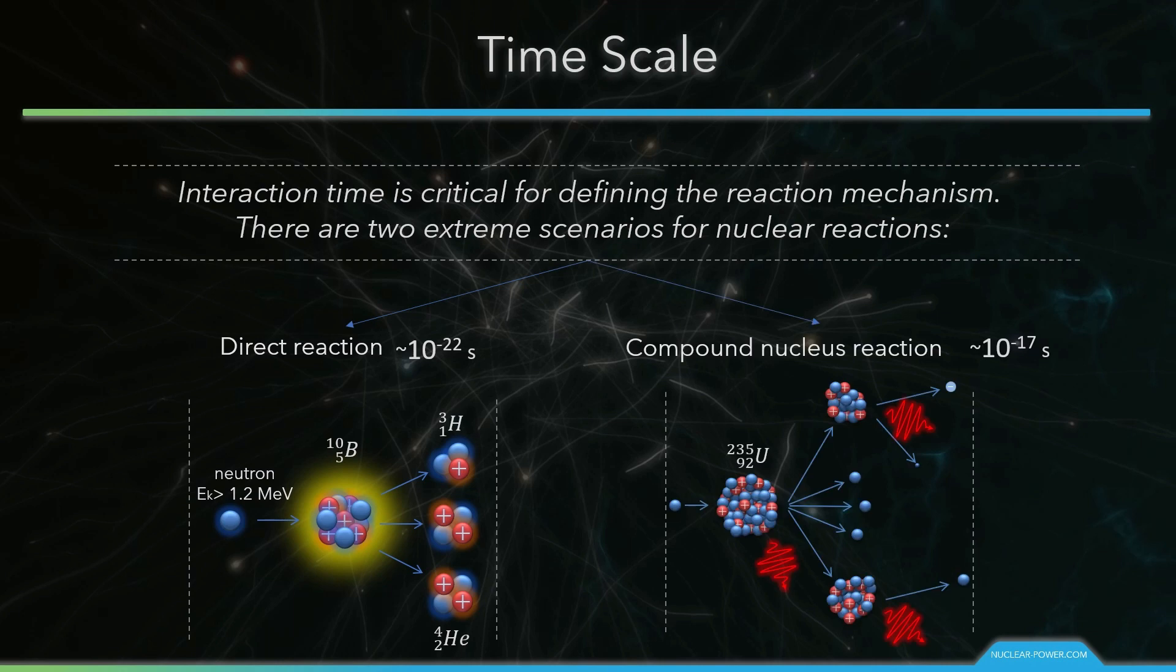When a projectile and a target nucleus are within the range of nuclear forces for a very short time, then a projectile interacts with a single nucleon only. These types of reactions are called direct reactions. Products of the direct reactions are not distributed isotropically in angle, but they are forward-focused.